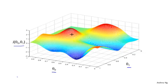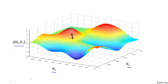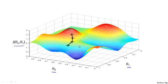In gradient descent, what we're going to do is spin 360 degrees around, look all around us, and ask: if I were to take a little baby step in some direction and I want to go downhill as quickly as possible, what direction do I take? It turns out you find that the best direction to take a little step downhill is roughly a certain direction. From this new point on the hill, you again look all around, decide what direction to step in order to go downhill, take another step, and keep going until you converge to this local minimum.